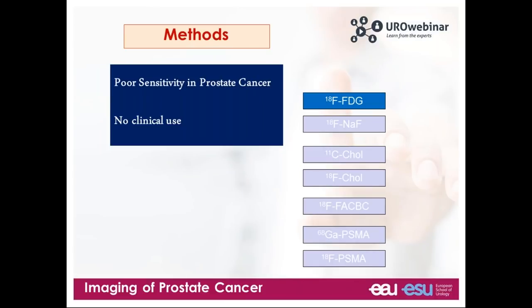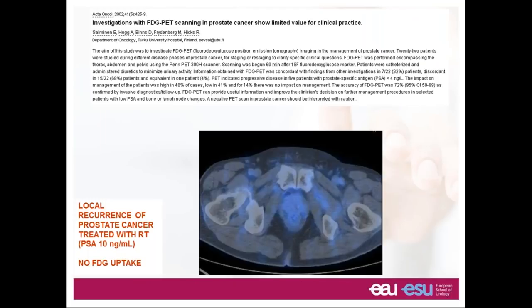The first tracer I'm going to talk about is FDG — fluorodeoxyglucose — which is very widely used in oncology. In the majority of solid tumors it can be usefully applied, but not in prostate cancer. It's very well known that FDG has very poor sensitivity for imaging prostate cancer, and there's essentially no clinical use for FDG right now. The majority of prostate cancers will lack FDG uptake, so the sensitivity is very poor and there's almost no application for that.